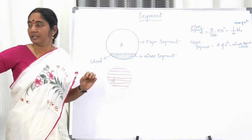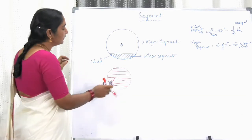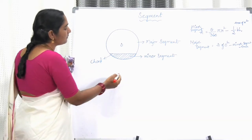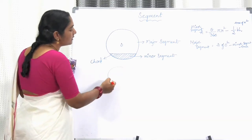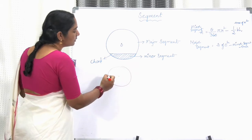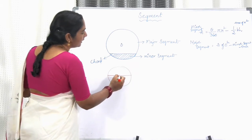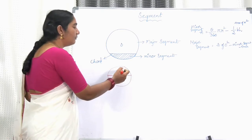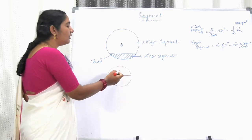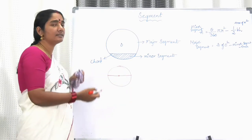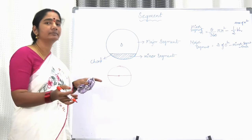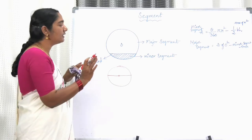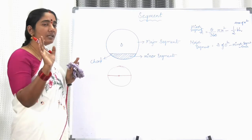For example, if the chord is a diameter, then which is the minor segment and which is the major segment? In that case, both segments are equal. There is no minor, there is no major — both are equal segments.